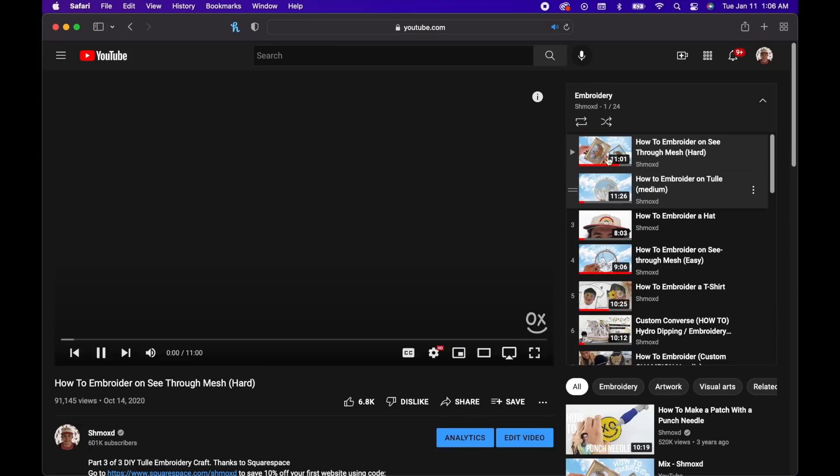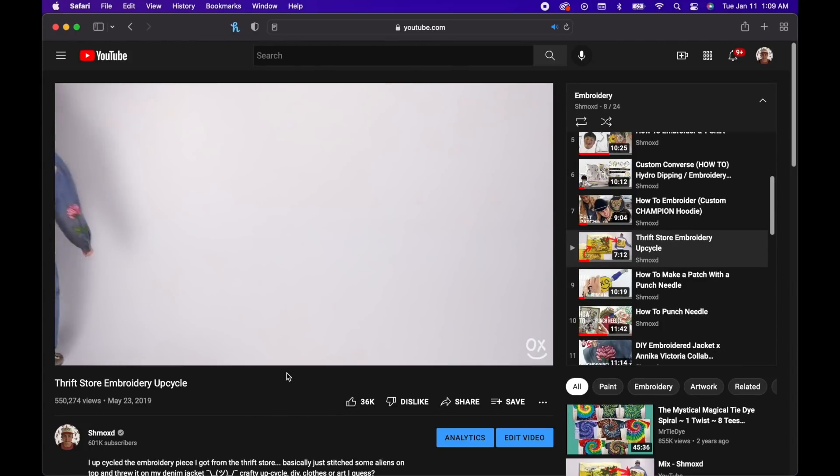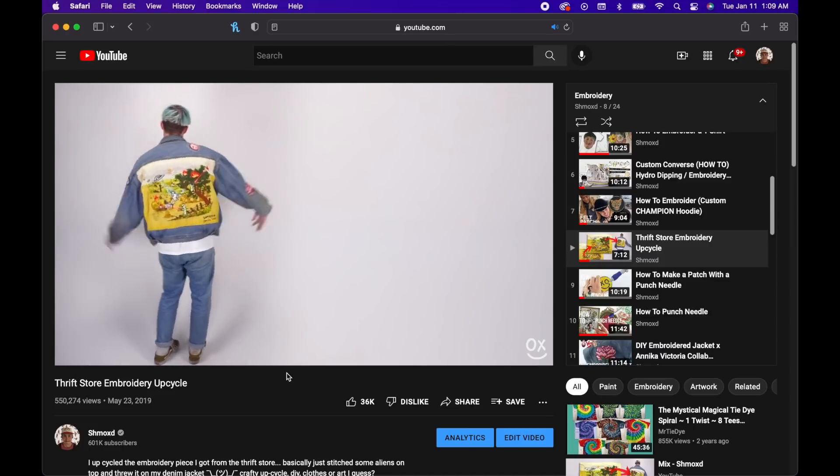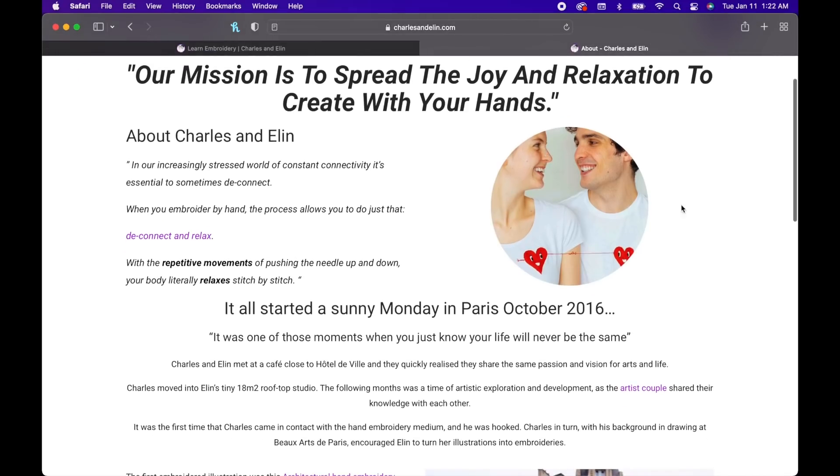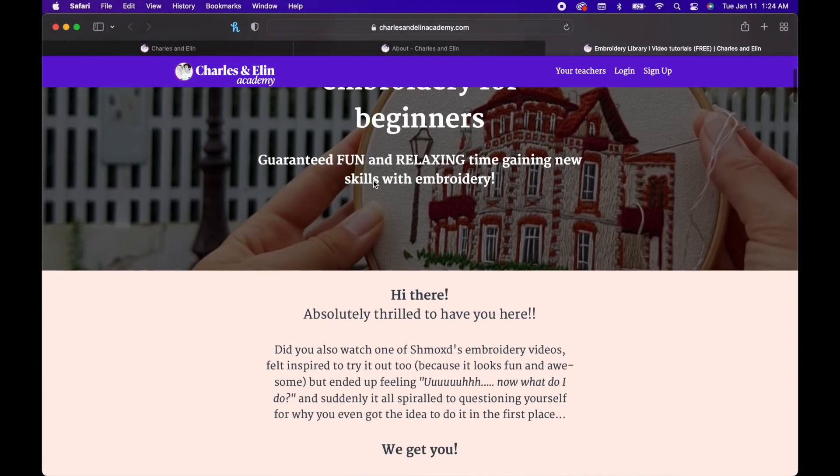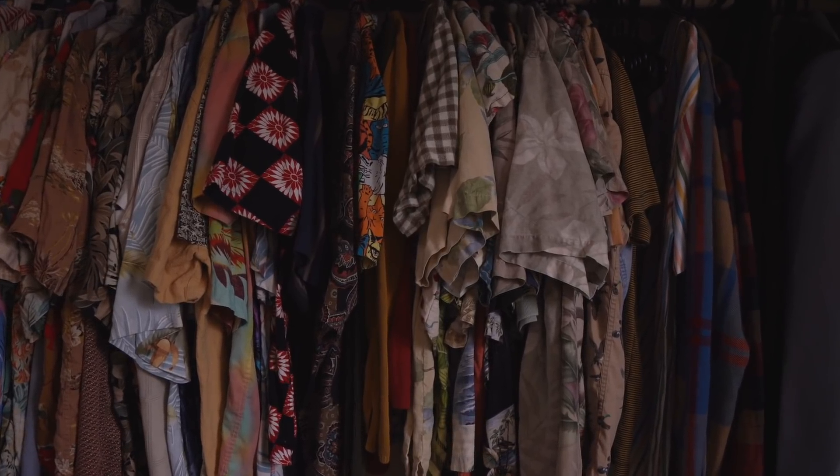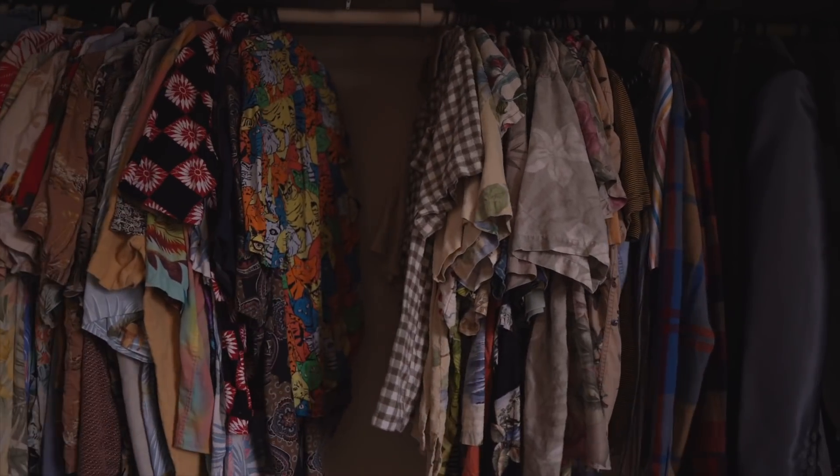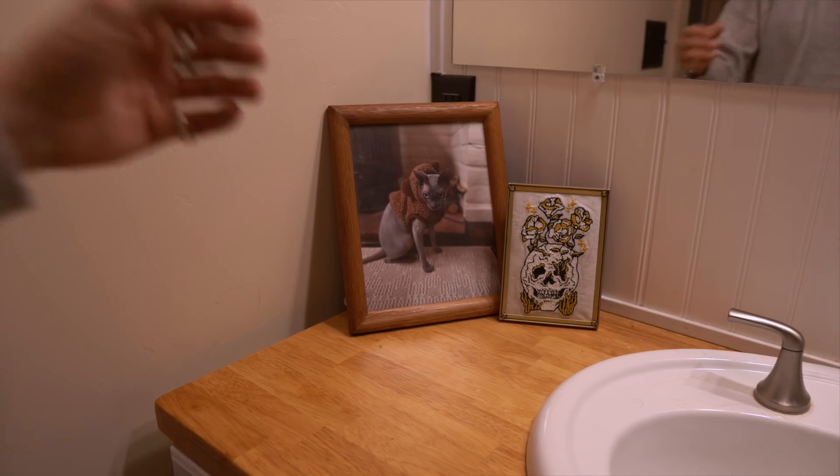So I actually teamed up with these cuties, Charles and Ellen, who are expert embroidery artists who have taught so many people and actually have a beginner course for free. I'll put that link in the description. I'm thinking how can I make this more accessible to everyone? Maybe I'll just try to find things around the house like some sweaters and only use the things found around my house to use like a needle or an embroidery hoop.